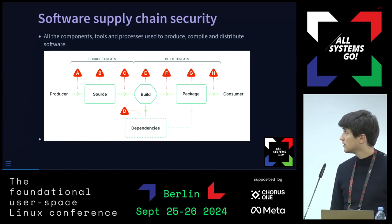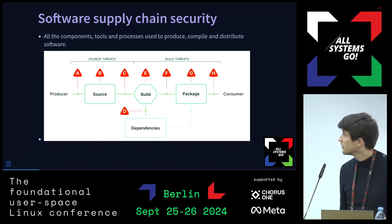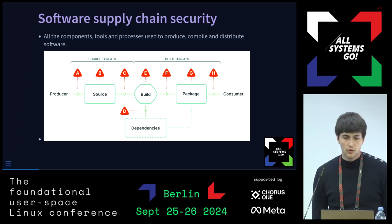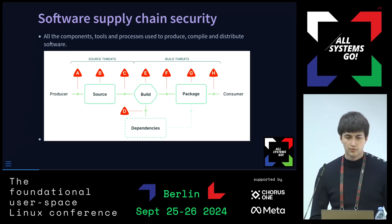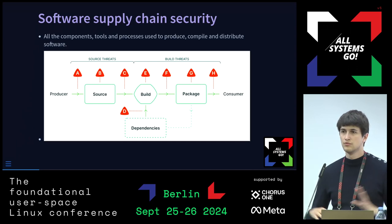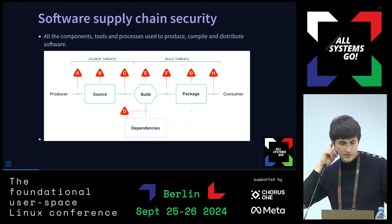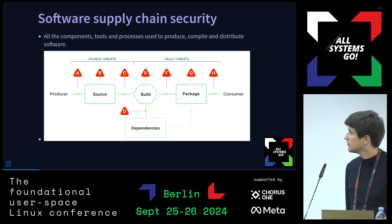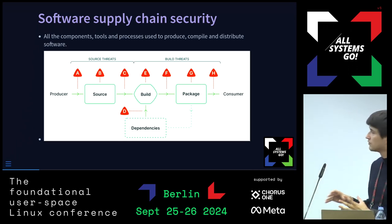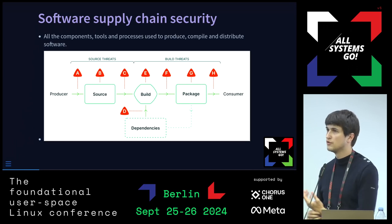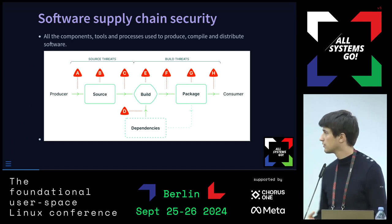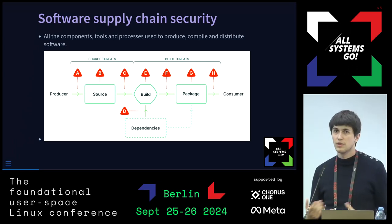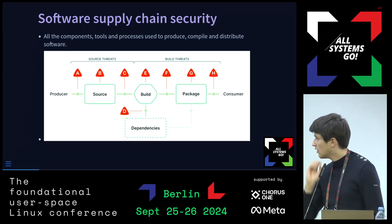First, let's talk about what is the software supply chain and software supply chain security. Basically, the software supply chain is all the components, tools, and processes that are used to produce, compile, and distribute software — everything from source code to an executable installed on your machine, including the contribution process, the build and compilation process, and the distribution process.